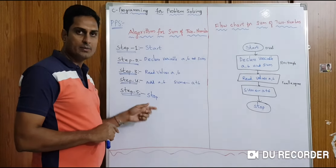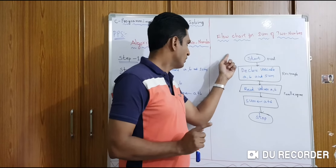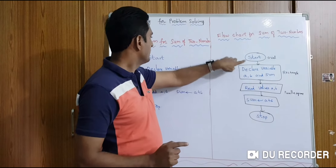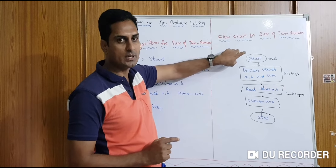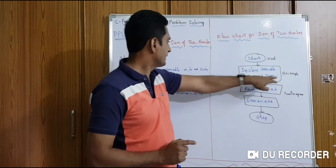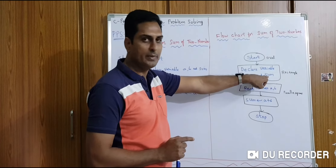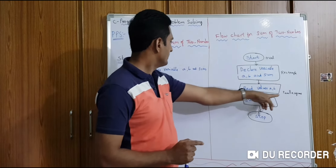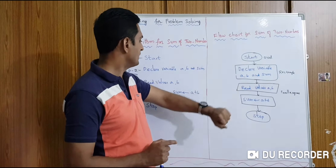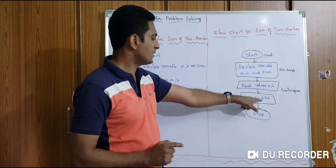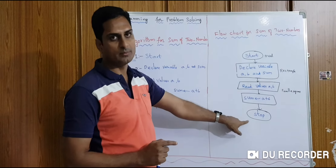Finally, Step 5 is Stop. For the flowchart of sum of two numbers: the program starts with an oval (Start). Then a rectangle for declaration of variables A, B, and Sum. Then a parallelogram to read the values of A and B. Then a rectangle again for the formula sum of two numbers. Then an oval to stop the program.